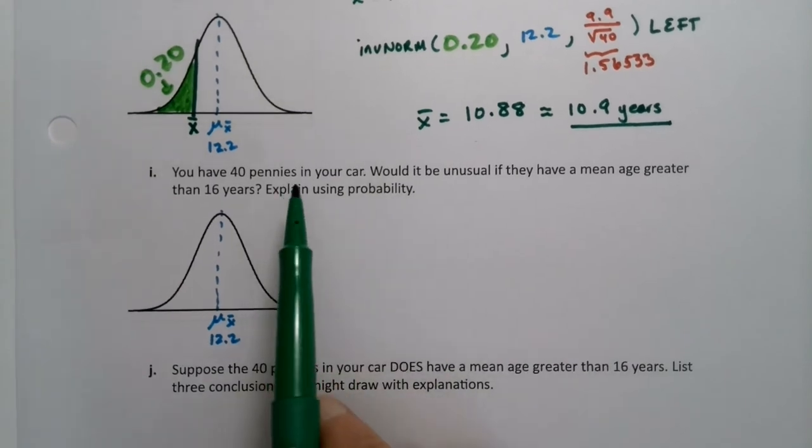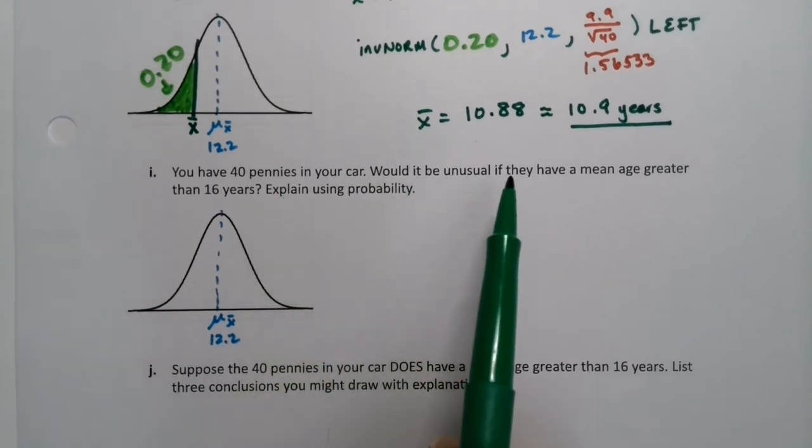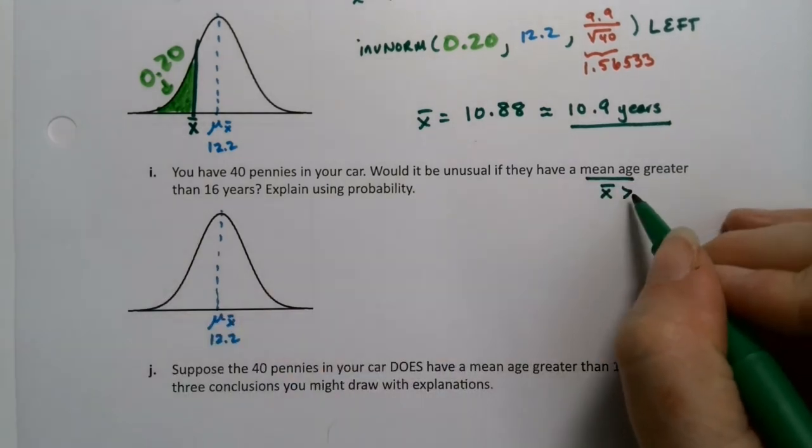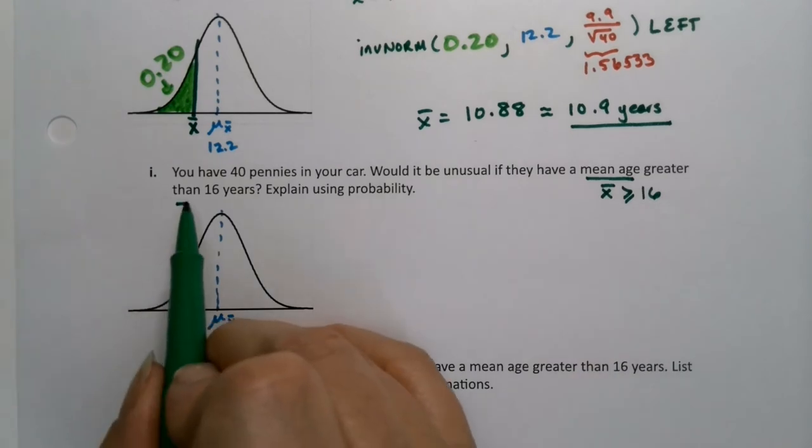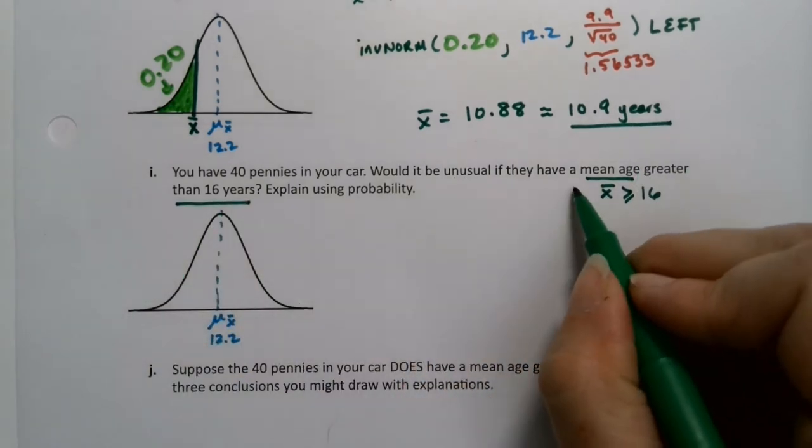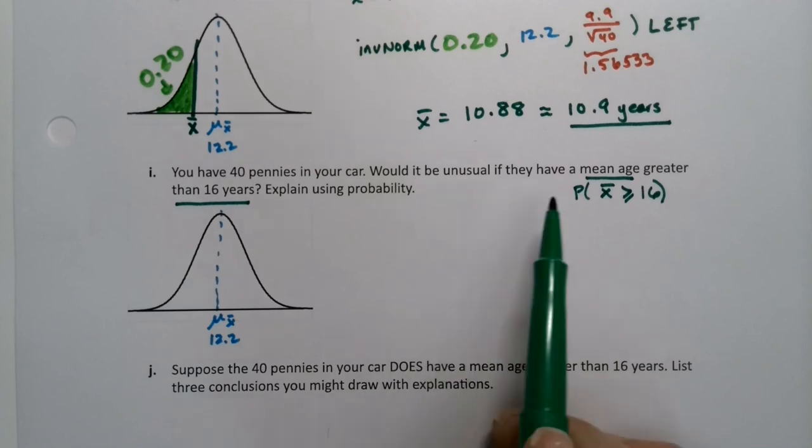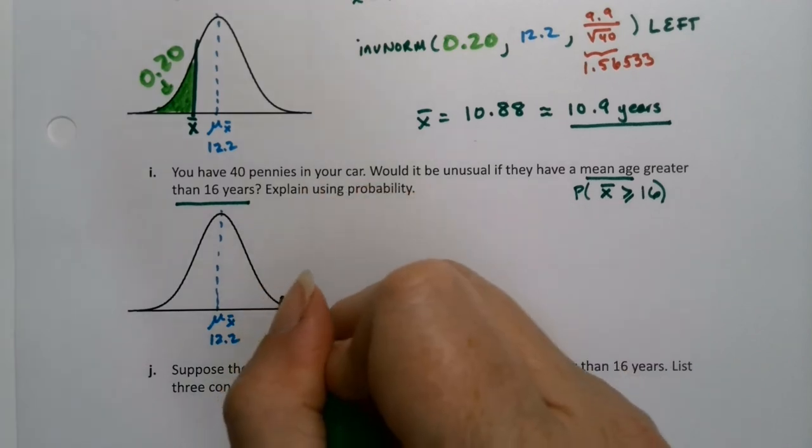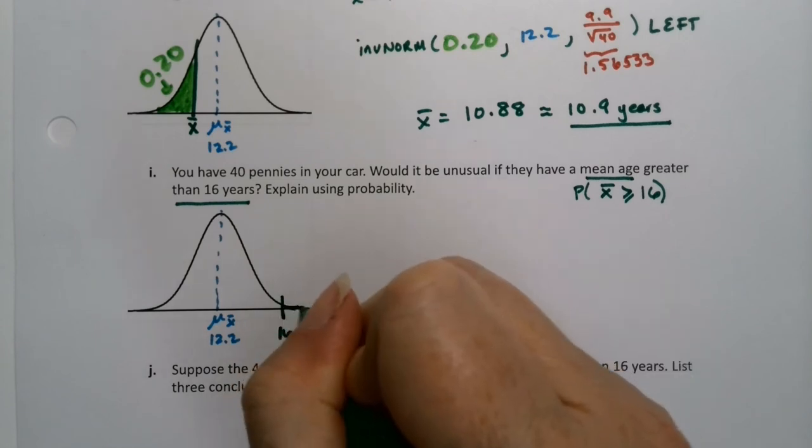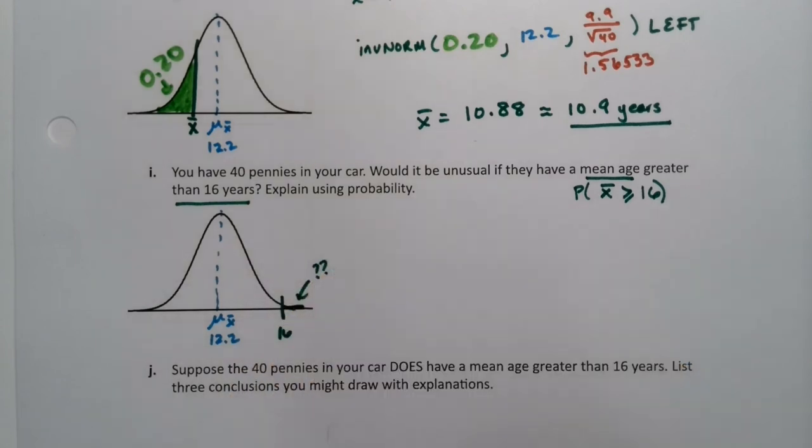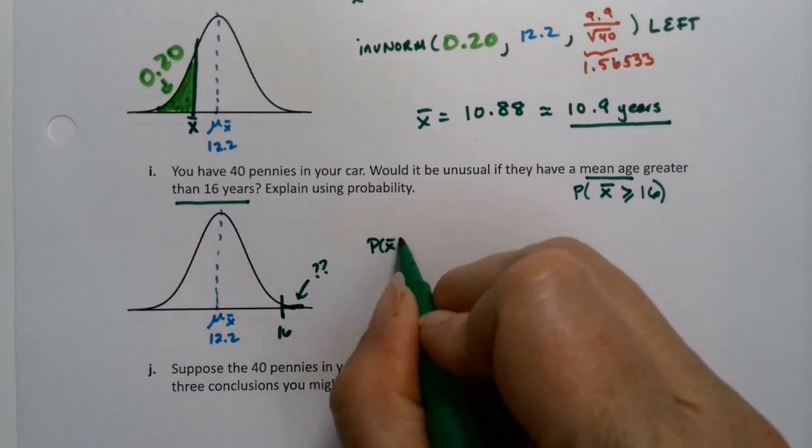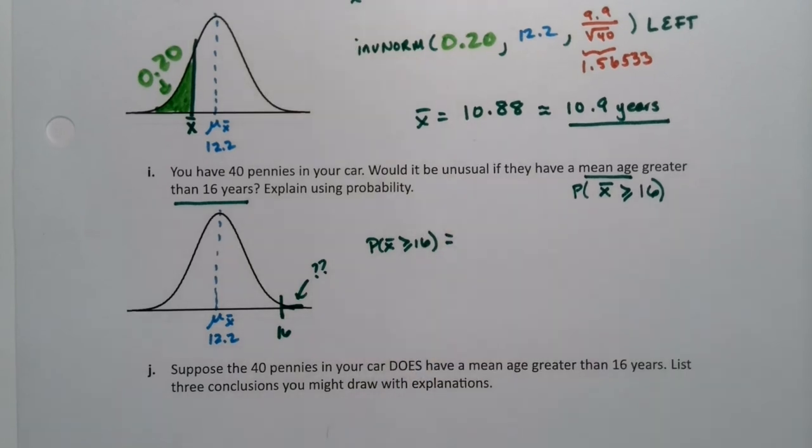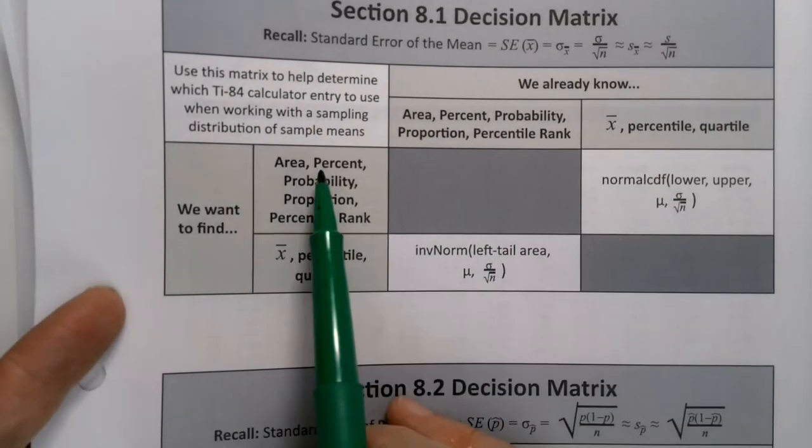Alright, now you have 40 pennies in your car. Would it be unusual if they have a mean age greater than, so greater than or equal to 16? See that? Would it be unusual means we want to know the probability. What's the probability that we have a mean age greater than or equal to 16? Okay, so 16 is over here somewhere. Hello, 16. And I want to shade this way. I'm looking for this area. So I want to know the probability that x bar is greater than or equal to 16 in order to figure out the unusual piece.